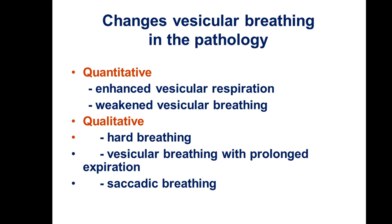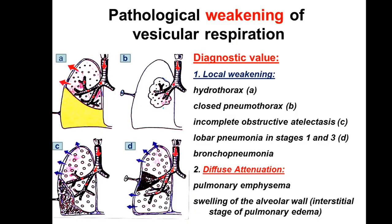Changes of vesicular breathing in pathology: quantitative changes may be enhancing or weakening of vesicular breathing. Qualitative changes may cause harsh breathing, vesicular breathing with prolonged expiration, and saccadic breathing. Pathological weakening of vesicular respiration may occur in hydrothorax (accumulation of fluid in the pleural cavity), enclosed pneumothorax, incomplete obstructive atelectasis, lobar pneumonia, and the first and third stages of bronchopneumonia.